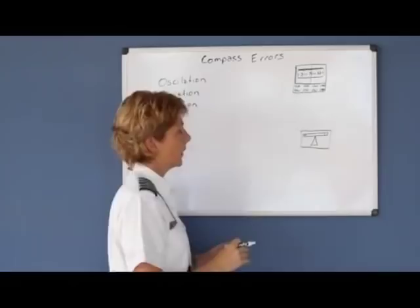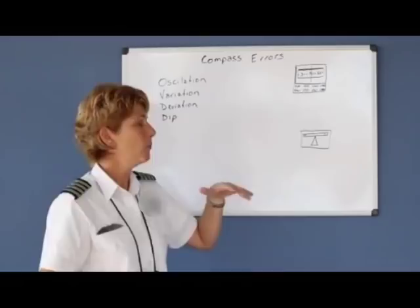Even though they've dampened some of the erratic movement, they can't totally eliminate it. So your compass, if you're flying in turbulence, wouldn't be completely accurate as it's bouncing around.